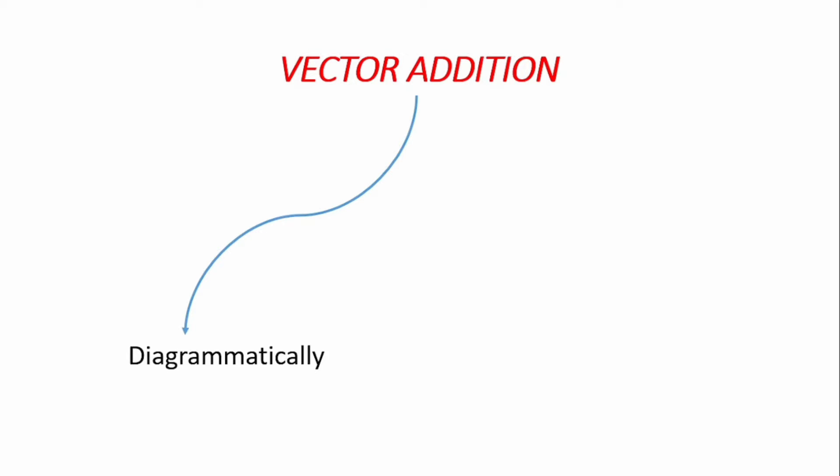First and foremost, vector addition. Vectors are added either diagrammatically or analytically. We can add vectors by drawing what you call a polygon of forces and looking for the resultant that closes the entire polygon. We can also add vectors by taking them to component forms and adding similar components. When we add vectors, we are finding what they call resultants, especially as it concerns forces.